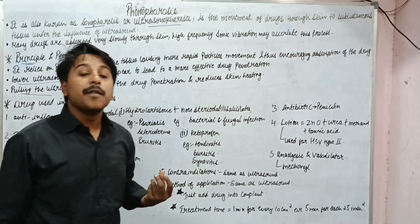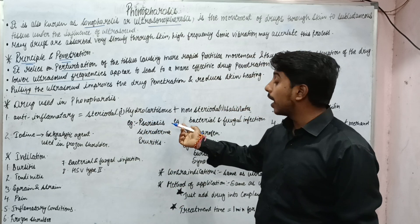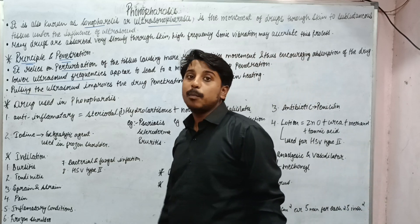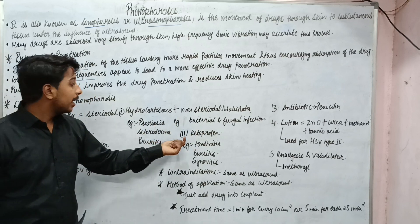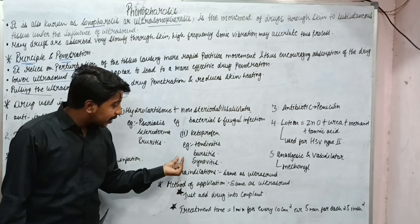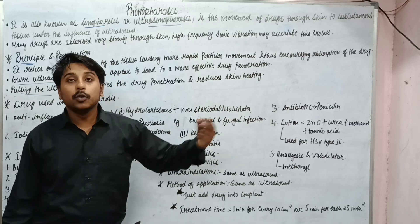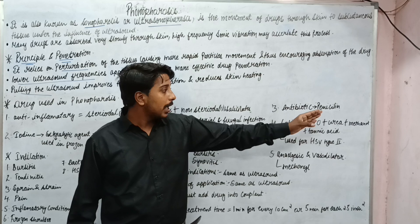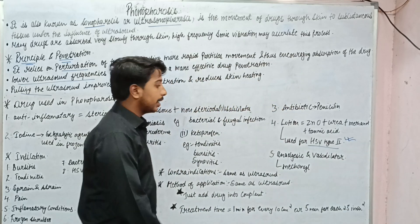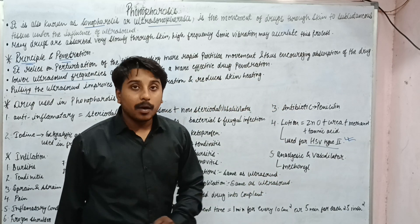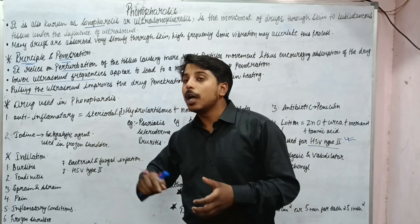What are the different kinds of drugs used in Phonophoresis? Anti-inflammatory drugs, which can be steroidal — here you can use hydrocortisone for psoriasis, scleroderma, and pruritus. Non-steroidal anti-inflammatory drugs include salicylate for bacterial and fungal infection, and ketoprofen for tendonitis, bursitis, and synovitis. Next, antibiotics such as penicillin can be used. There is also a lotion containing zinc oxide, urea, methanol, and tannic acid, used for herpes simplex virus type 2 viral infection. For analgesic purposes, we can use myconyl. Another agent is iodine, which acts as a sclerolytic agent to break adhesions in frozen shoulder.